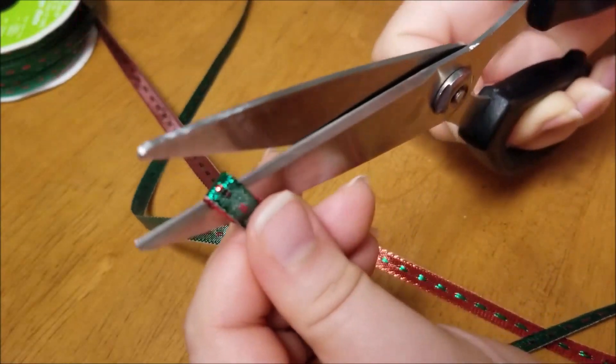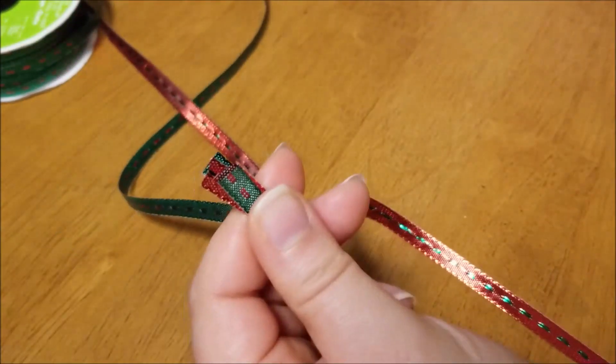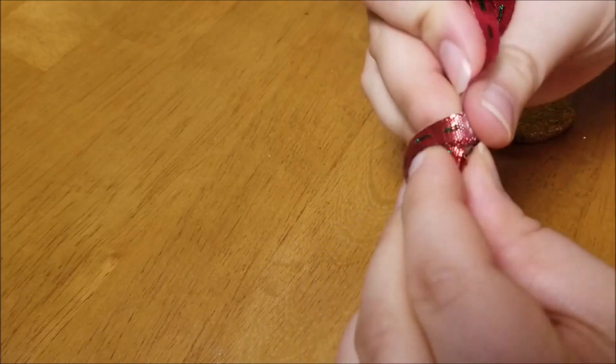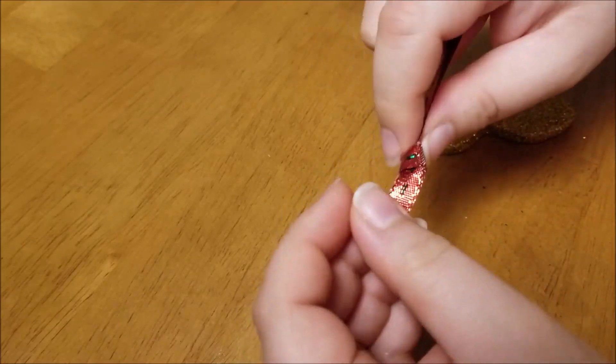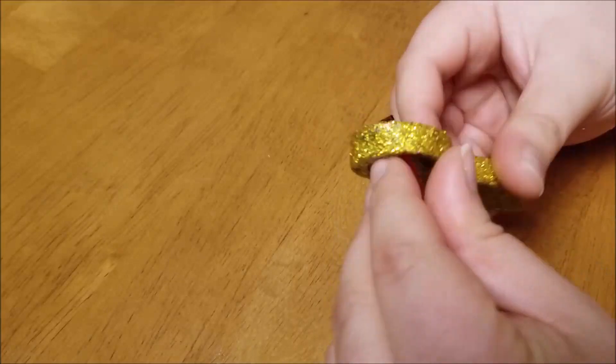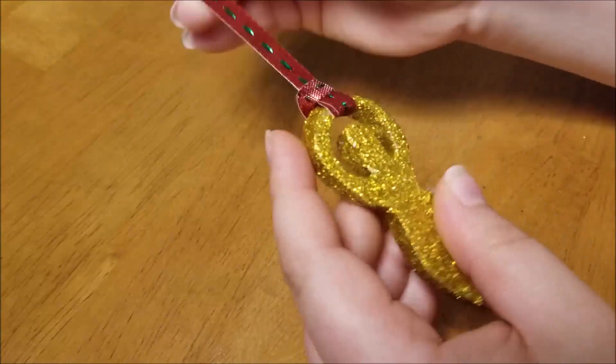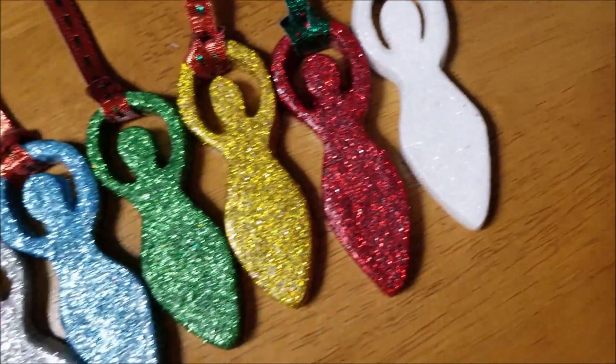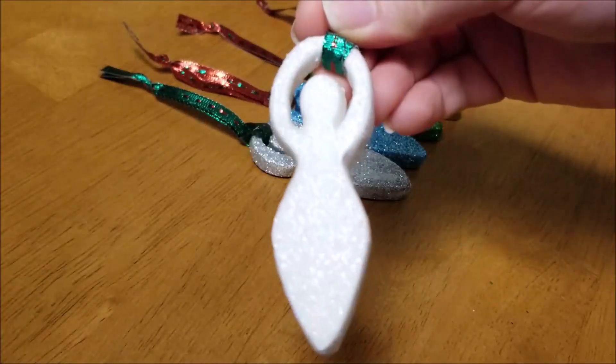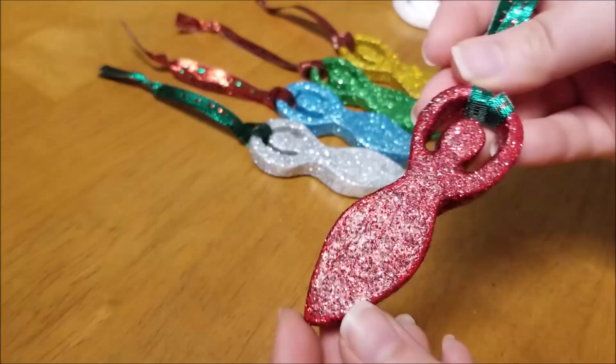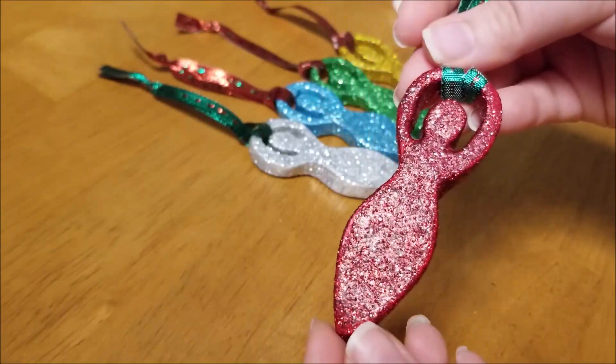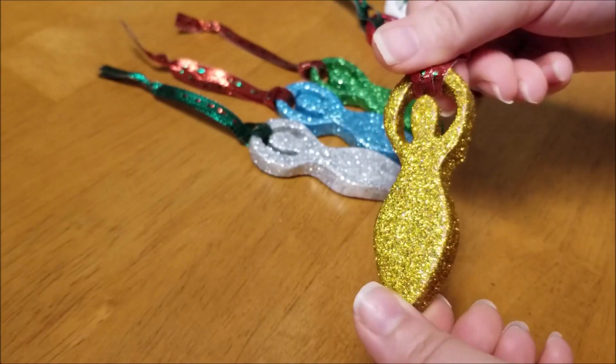Once they're all dried, there's only one thing left to do and that's to add a decorative holiday ribbon. I'm using red and green and I cut them to 12 inches before tying the ends together and looping them through the arms of the Yule Goddess ornaments. And there they are, they're so sparkly and they're really going to shine under those Yule lights on the tree. They're totally customizable and make the perfect present for your fellow Pagan Pals out there.